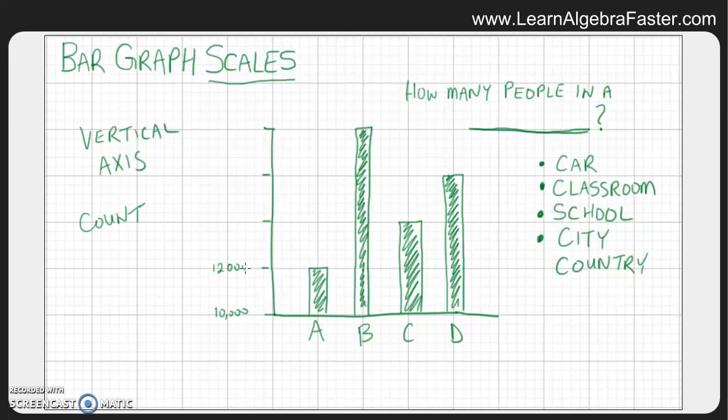And maybe we will go 12,000, 14,000, 16,000, and 18,000 people. Now notice every time the difference between each mark are always the same because they're the same distance apart. So that's important to know on scales.